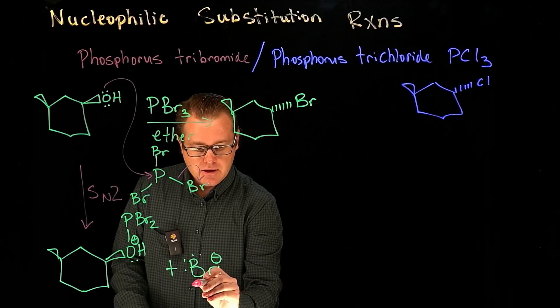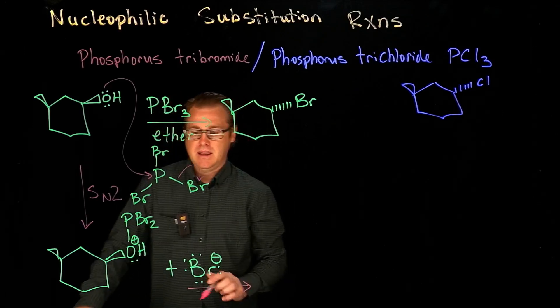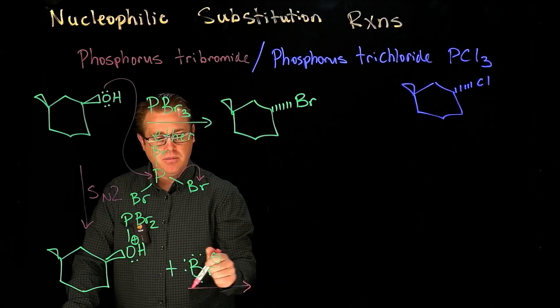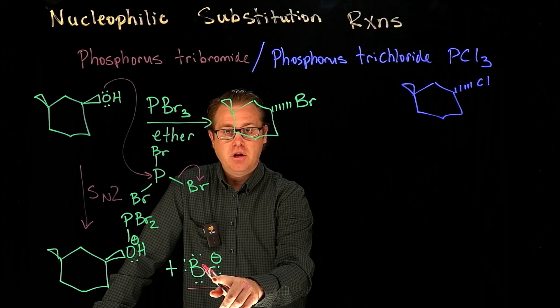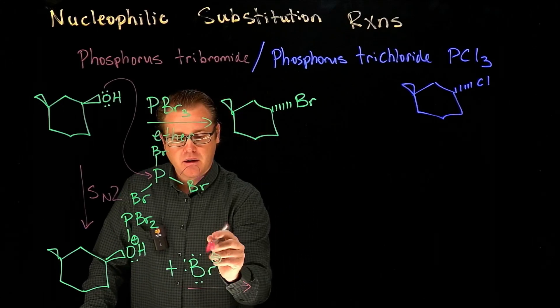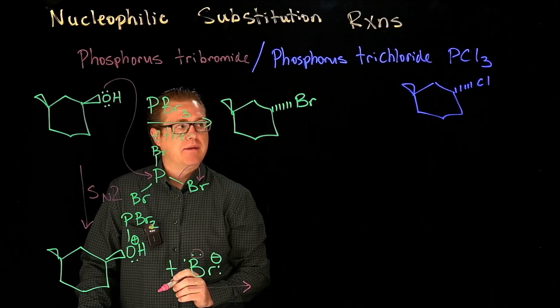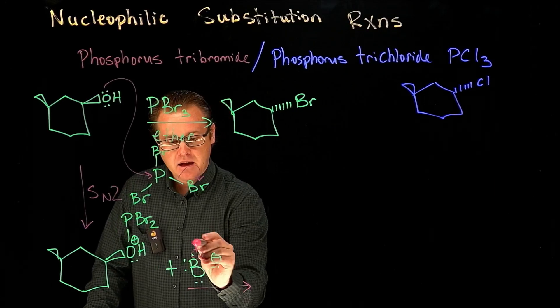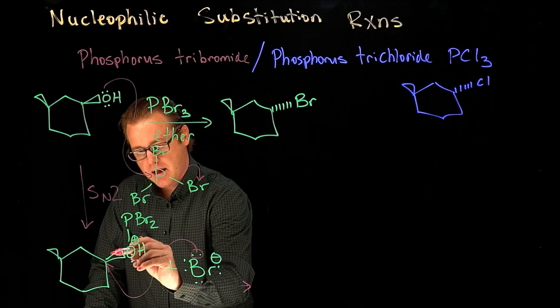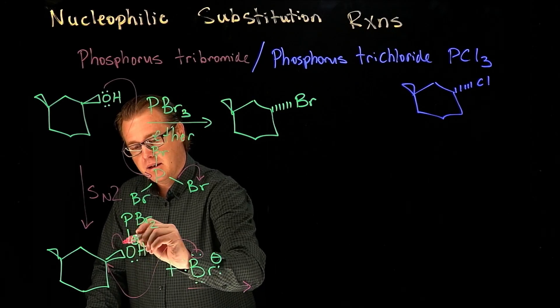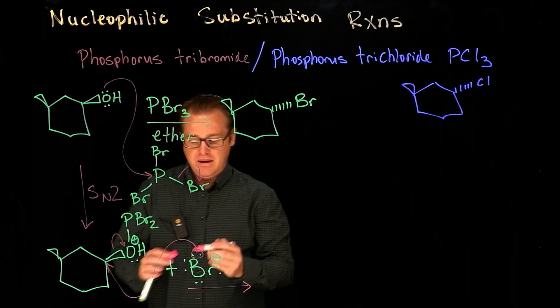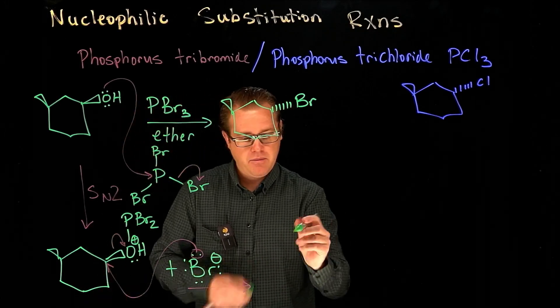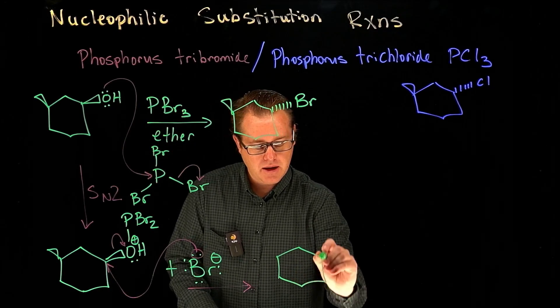In our next step, we've created a good leaving group. We have a nucleophile right here. We can take this lone pair and come in. Backside attack. Make the leaving group leave. And we have generated our product.